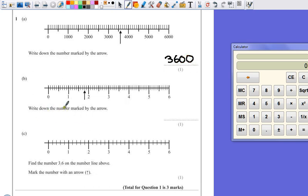For part B, write down the number marked by the arrow. Now this time we've gone from 1 to 2. So each of our 10 little marks represents 0.1.